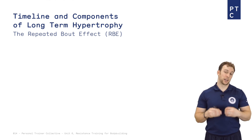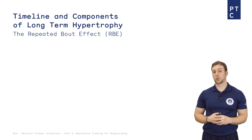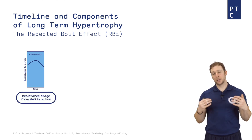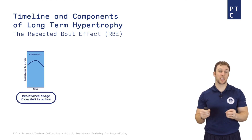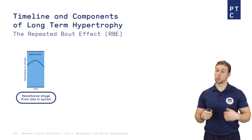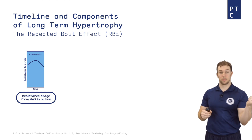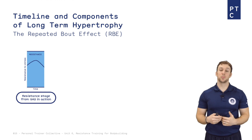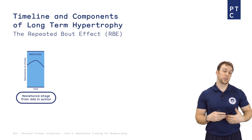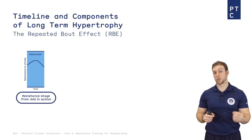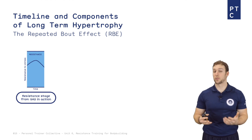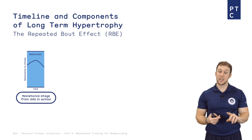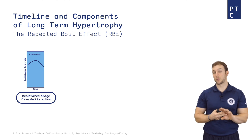One of the ways that the body actually accommodates to higher levels of workload is what's known as the RBE, or the repeated bout effect. The repeated bout effect is basically the resistance stage from GAS in action. If you recall, your immediate reaction is alarm. In the following days of a resistance training program you may find yourself very sore. You're going to incur muscle damage at the micro level, which causes delayed onset muscle soreness in 24 to 48 hours. The amount of muscle damage you incur is relative to the volume and intensity that you performed the exercise.